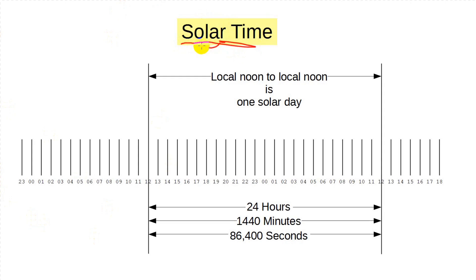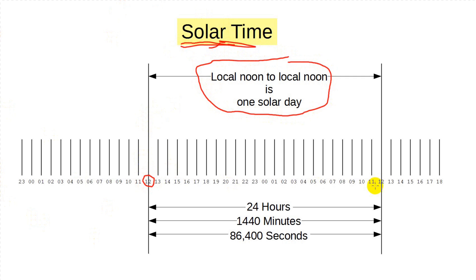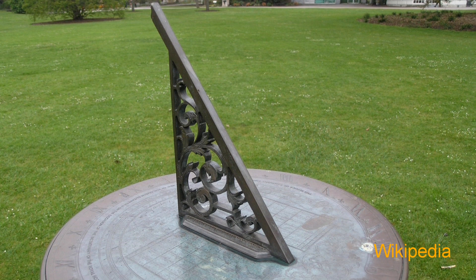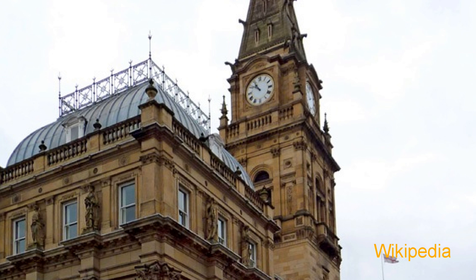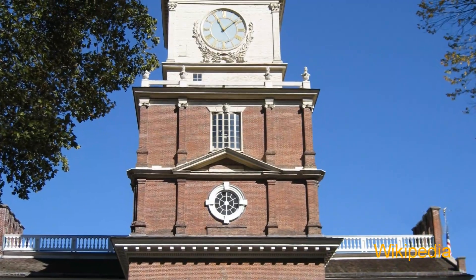For millennia, people have measured time using the sun. Local noon is designated as the point in time when the sun reaches its highest point in the sky — a close approximation of this is when the sun is due south of the observer's location. You've all seen sundials that can be used to determine local noon. Each city or town used its own observations to determine its own local noon and the clock in the town hall was set to this time. Everyone measured everything from this time.